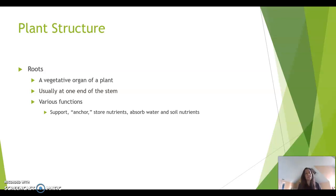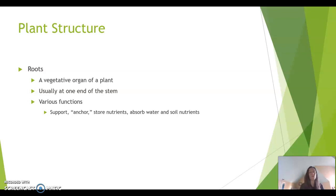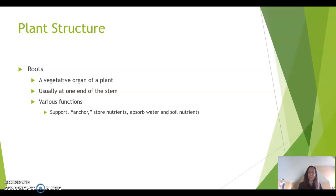Roots are the third and last vegetative organ for a plant. In the vegetative stage — the growing stage — we see growth of the shoot with the stem and the leaves, and also growth of the roots underground. We don't always see it, but it is there and it's very important. The roots are an important and often invisible part of the plant. They support and anchor a plant and also store nutrients.